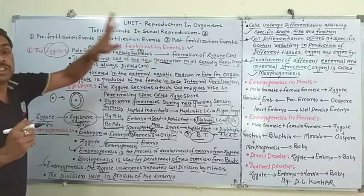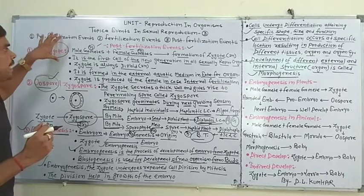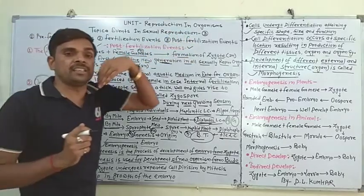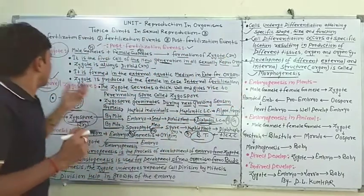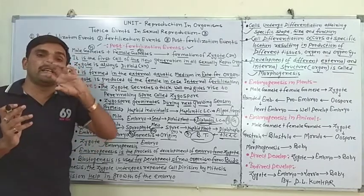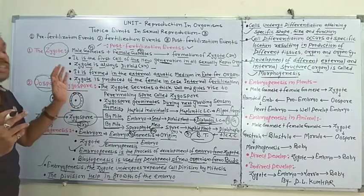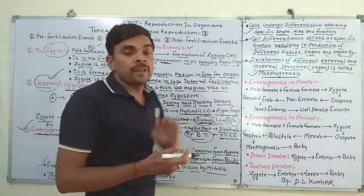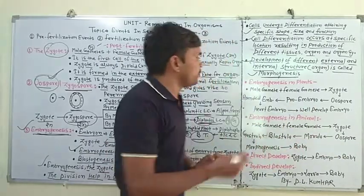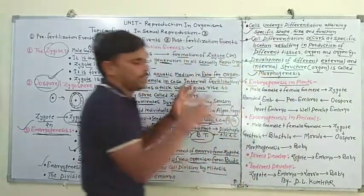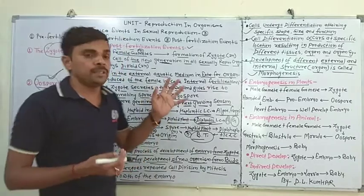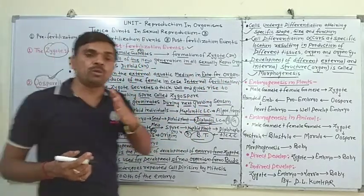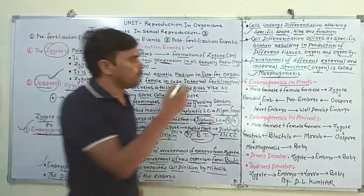तो यह थी post-fertilization events। इसमें हमने तीन events discuss किए: Zygote — gametes के fusion को fertilization कहते हैं और fertilization के result को formation of Zygote कहते हैं; Oospore — Zygote अपने चारों ओर protective cover बना लेता है जो resting period कहलाता है जिसे Oospore या Zygospore कहते हैं; Embryogenesis — Zygote से embryo का development होना। Embryogenesis in plants अगले chapters में descriptive रूप में देखेंगे।